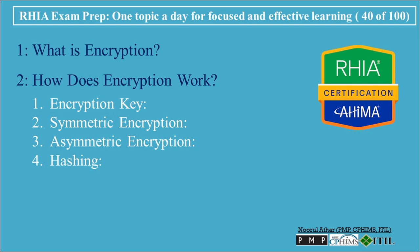Hashing is a form of encryption used to ensure data integrity, often for passwords. A hash function converts the original data into a fixed-size string of characters. Even a small change in the original data results in a completely different hash. Unlike symmetric and asymmetric encryption, hashing is one-way — it cannot be reversed to retrieve the original data.